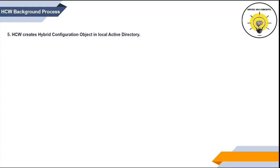The fifth step that HCW performs is it creates a hybrid configuration object in local Active Directory. To create these objects, HCW executes New-HybridConfiguration and Set-HybridConfiguration commands. We can verify this configuration by running Get-HybridConfiguration | FL on the on-premise Exchange server.